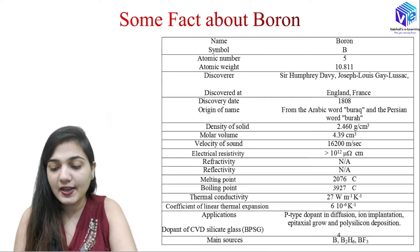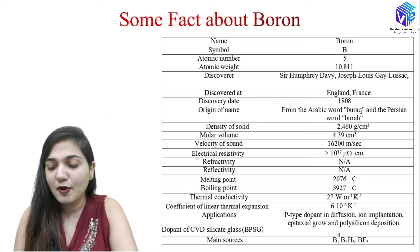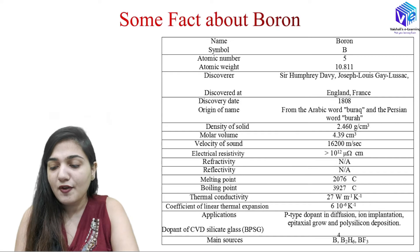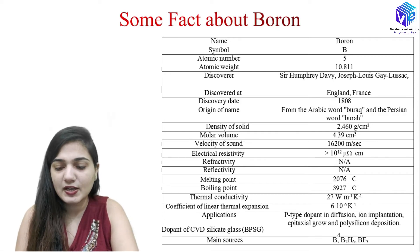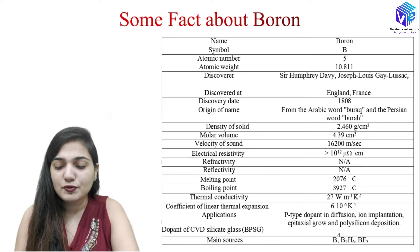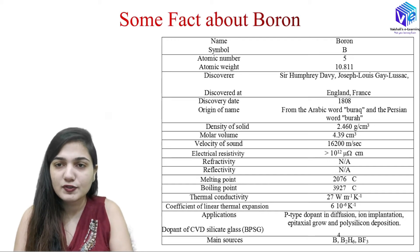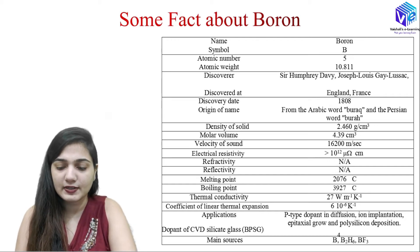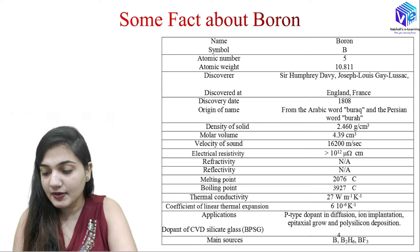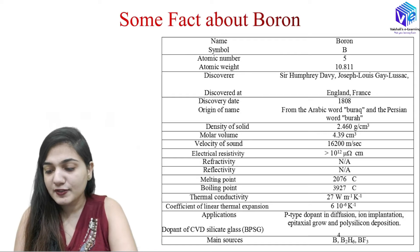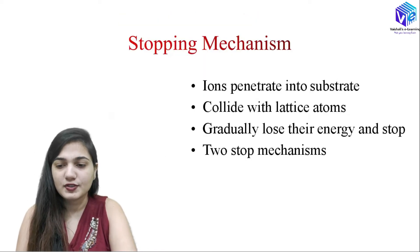Boron is used for manufacturing p-type dopants in the diffusion process. It is also used in the ion implantation process for epitaxial growth and polysilicon deposition. It is used as a dopant in the chemical vapor deposition process for silicate glasses like borophosphosilicate glass and phosphosilicate glass. The main sources are B2, B2H6, and BF3.